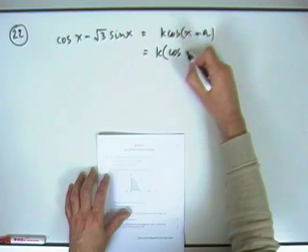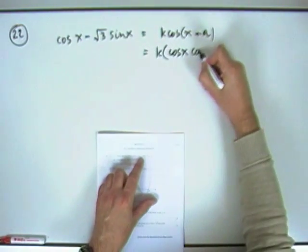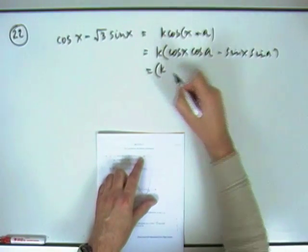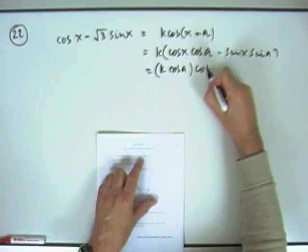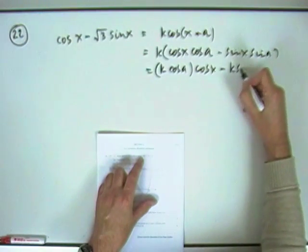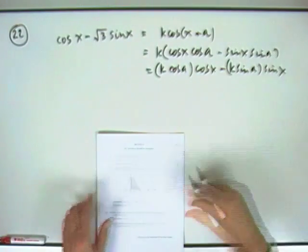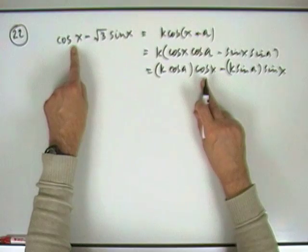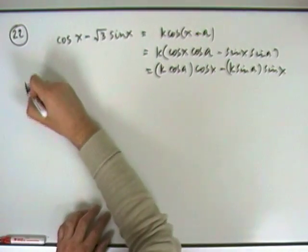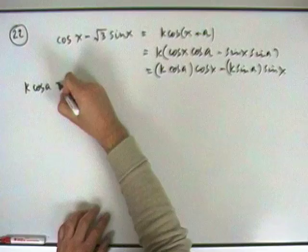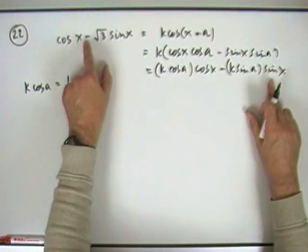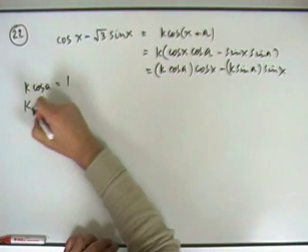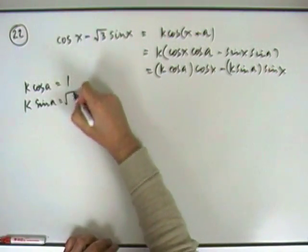Let's keep that k out of it just now. cos goes to cos cos minus sin sin. I'll just cosmetically pull out the coefficients just to emphasise them. Because the way it works is then I've just got to equate the two parts. Coefficient of cos has got to be the same, so if that's got one then equating the coefficients: k cos a equals one. For sines, that's got negative root three, so k sin a equals root three.